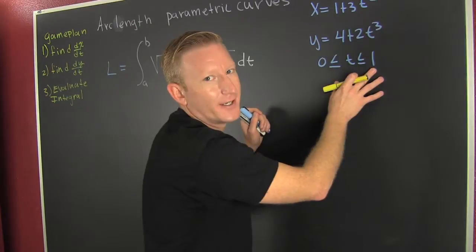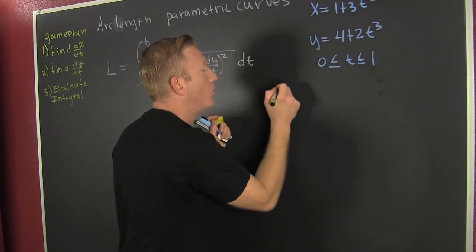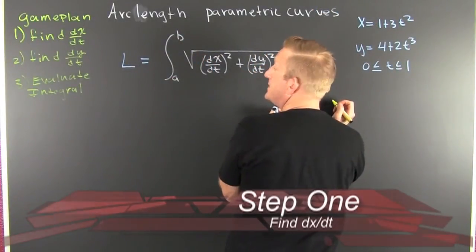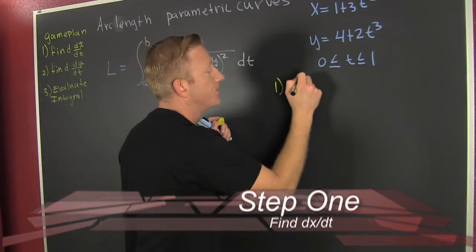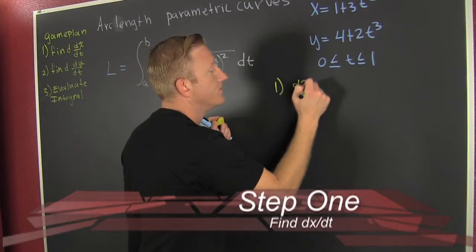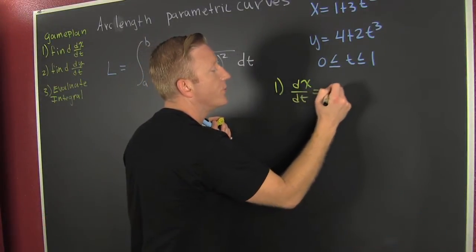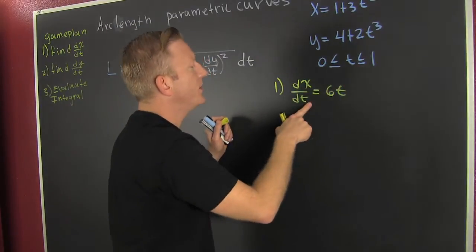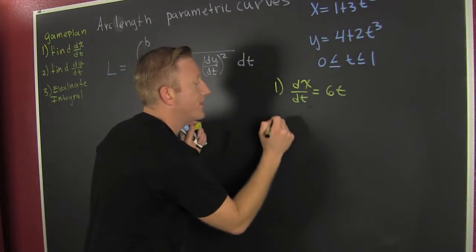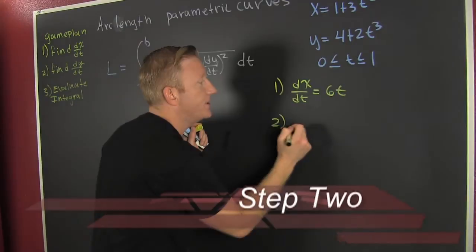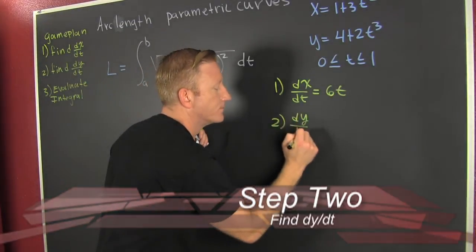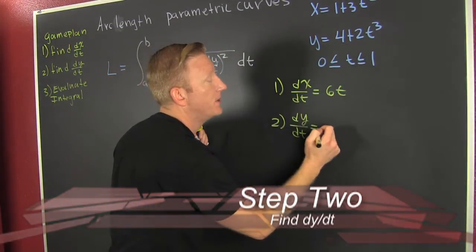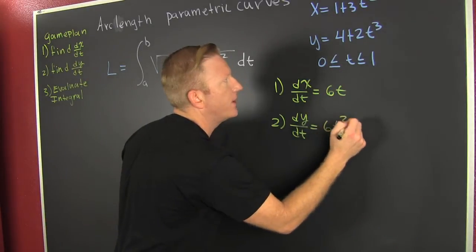Step 1: find dx/dt. dx/dt is going to be 6t. Step 2: find dy/dt. dy/dt is 6t squared.